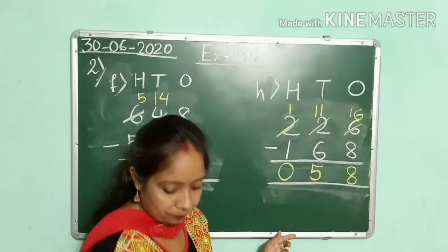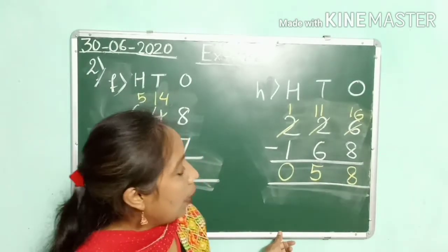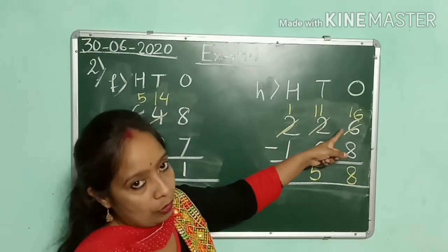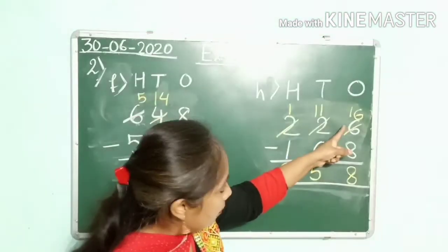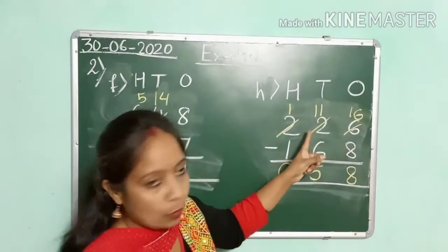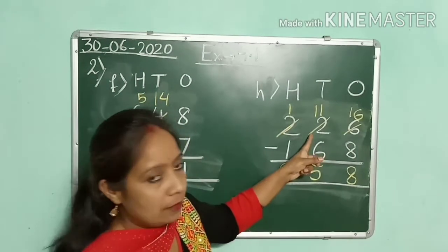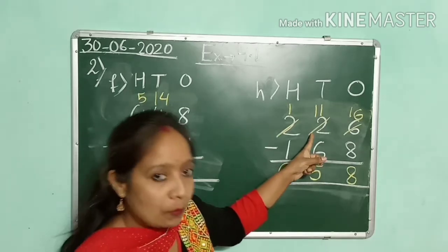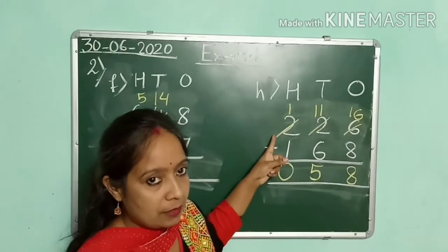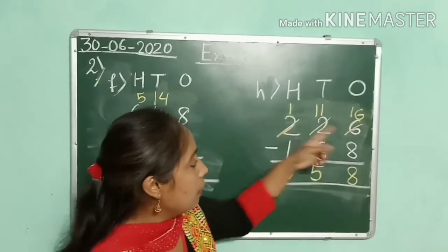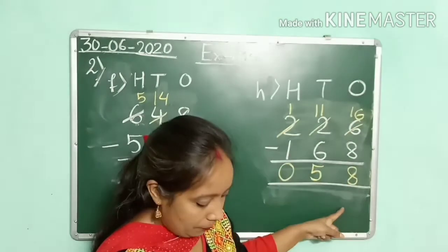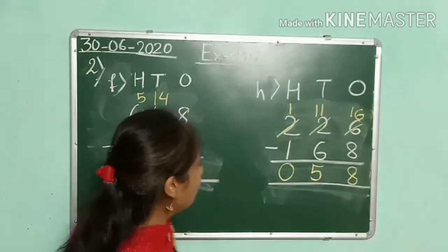So children, you have to just see whether you need to borrow or not. If the top digit is smaller, then you need to borrow from the 10s place. The ones digit will borrow from the 10s digit, and the 10s digit will borrow from the 100s digit. Then you subtract. Do it carefully. Let's take one more question, children.